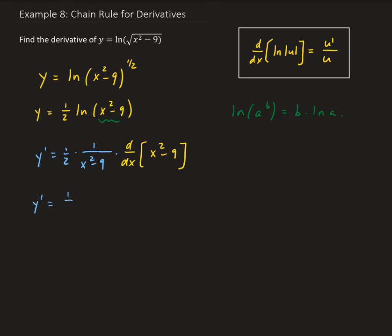We're going to get one half times 1 over x squared minus 9. And we take the derivative of x squared minus 9, that's going to give us 2x.